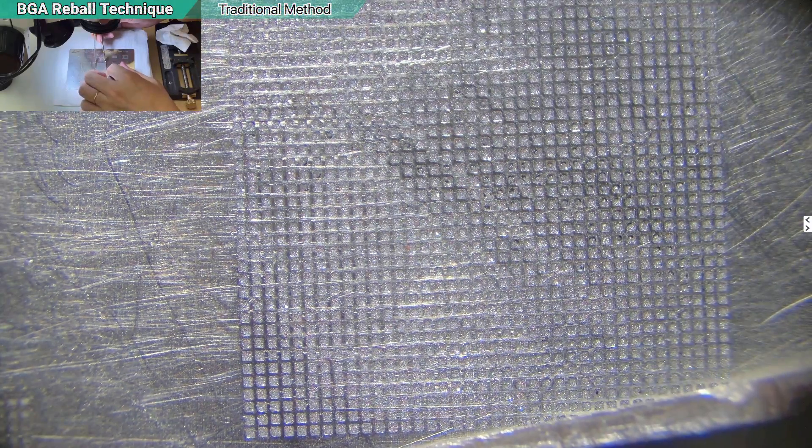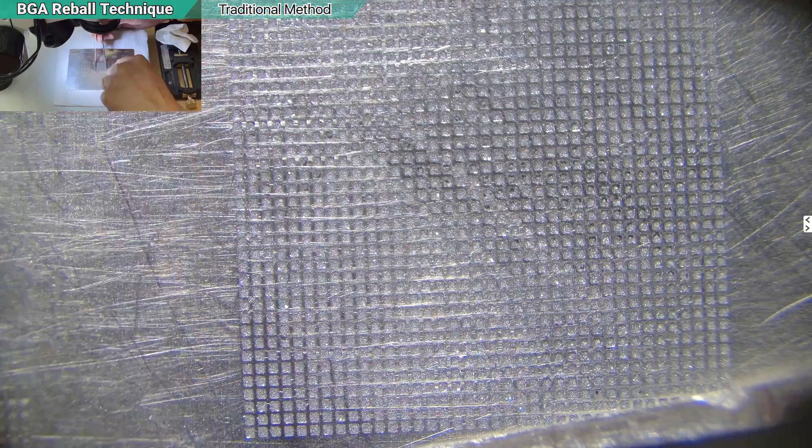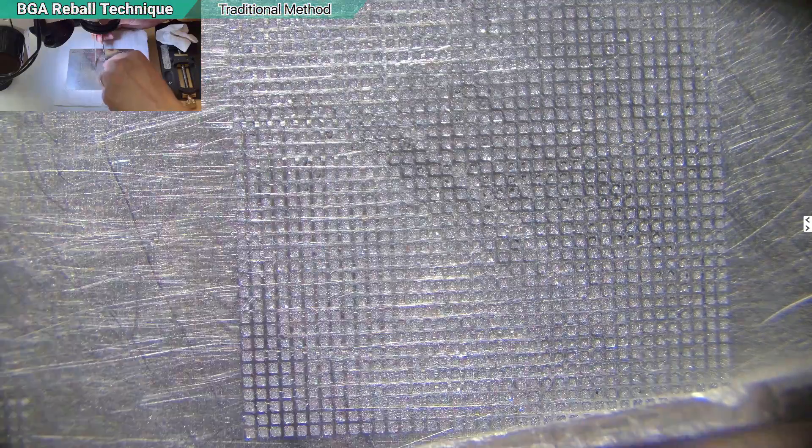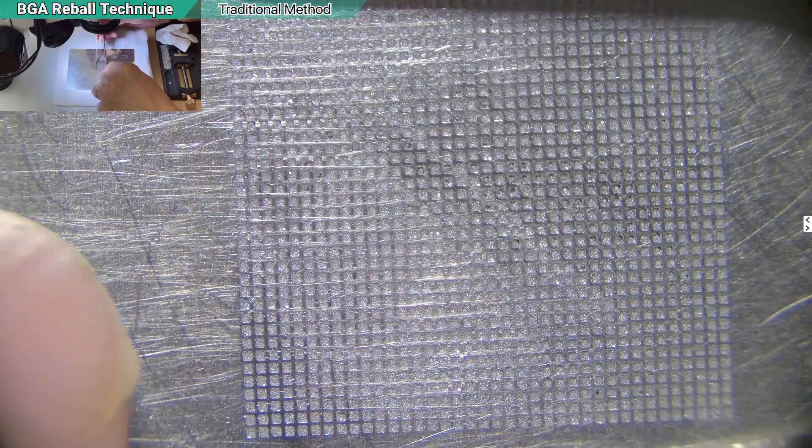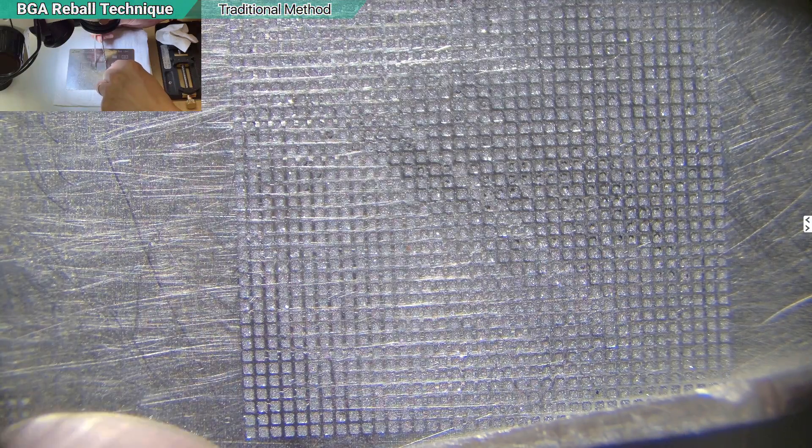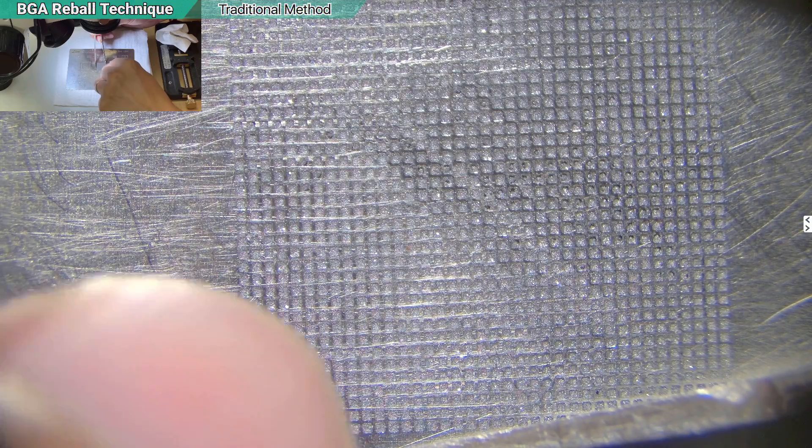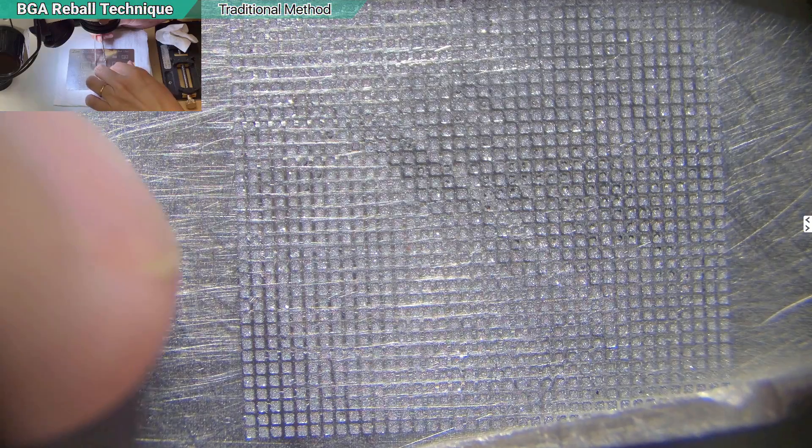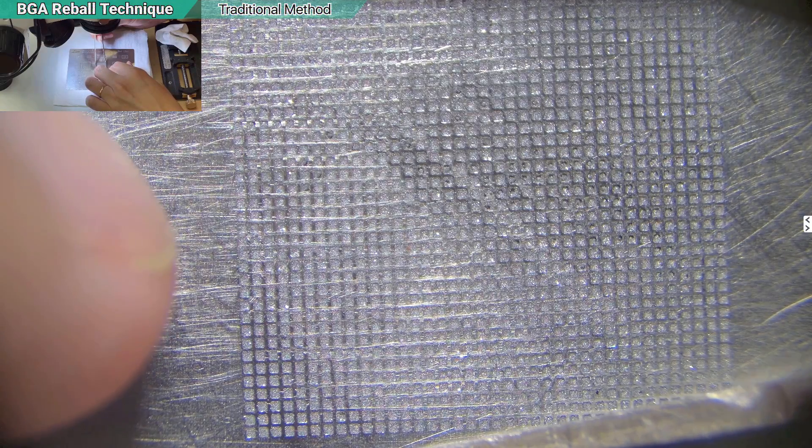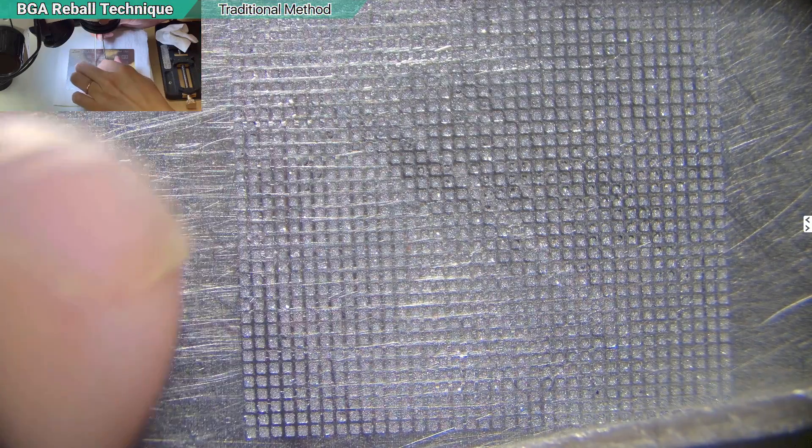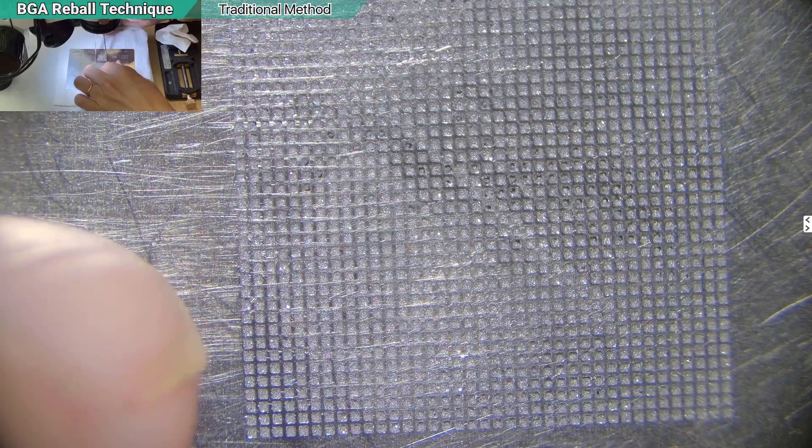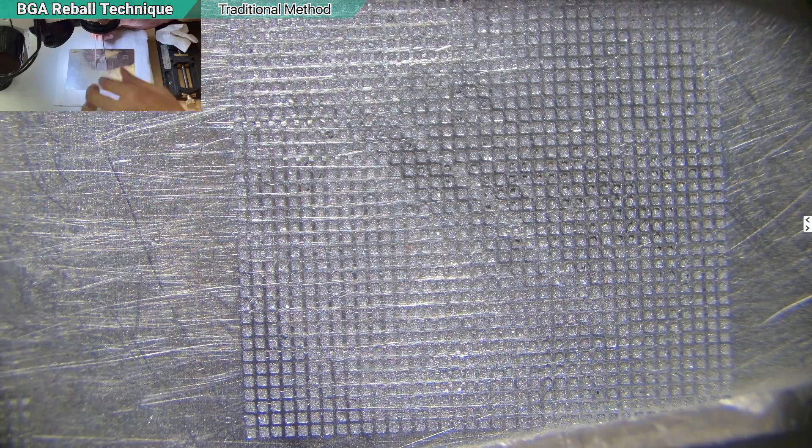And how you hold the stencil is also one of the keys. Okay, I will hold it like this way, this side as tight as possible, and leave the other side. You don't need to hold the entire IC because I will begin heating from here and then slowly go up. And then by the time I go up, I will let go of the beginning area and then slowly go to the right side. Okay, so let's begin.